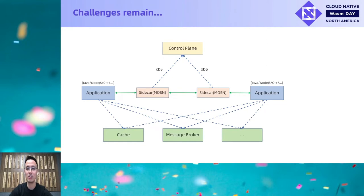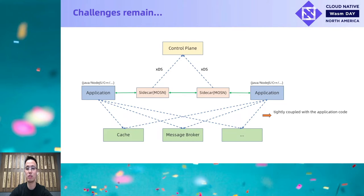However, as a company with a lot of business scenarios, we are still having challenges in other areas like cache, message queue, etc. As the diagram shows, they are tightly coupled with the application code. For example, if we want to migrate the cache from Redis to memory cache, we need to upgrade the SDK on the application side and require the application to change its code to use the new API.